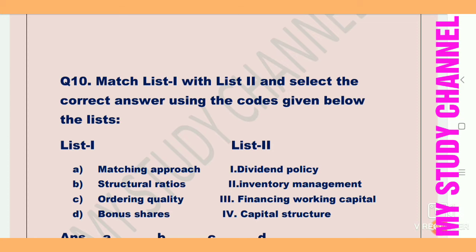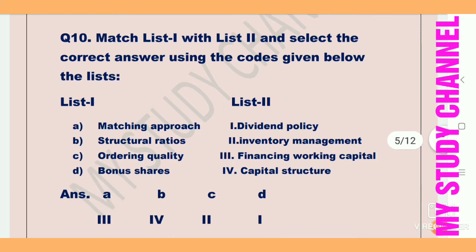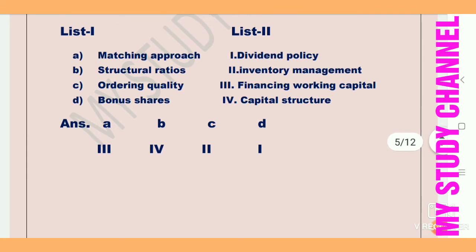Next question: match list one with list two. List one has: A — matching approach, B — structural ratios, C — ordering quality, D — bonus shares. List two has: first — dividend policy, second — inventory management, third — financing working capital, fourth — capital structure. The correct matching is: A with third (financing working capital), B with fourth (capital structure), C with second (inventory management), D with first (dividend policy).